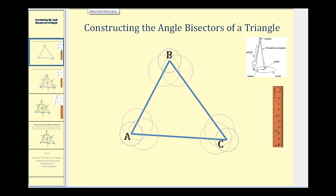The first step is to place the point of the compass at each vertex and swing an arc so that it intersects both sides of each angle. So if we put the point of the compass at vertex A, the first arc might look something like this. Then, leaving the radius the same, we do the same at vertex B and vertex C.